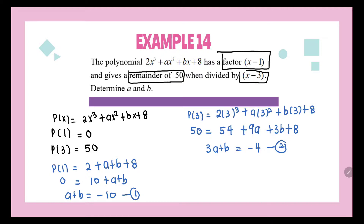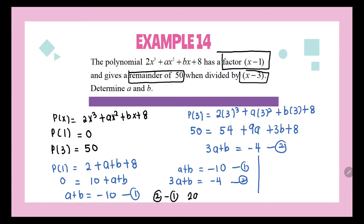We solve Equations 1 and 2 simultaneously. A + B = −10 and 3A + B = −4. Taking Equation 2 minus Equation 1 gives 2A = 6, so A = 3. Substituting back into Equation 1: 3 + B = −10, so B = −13.